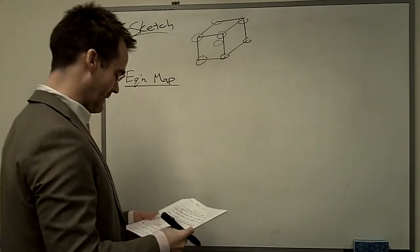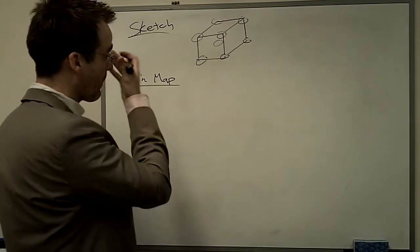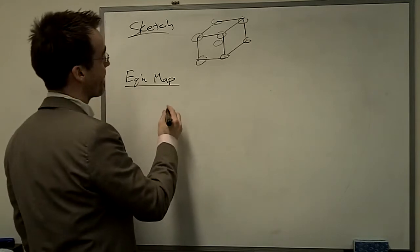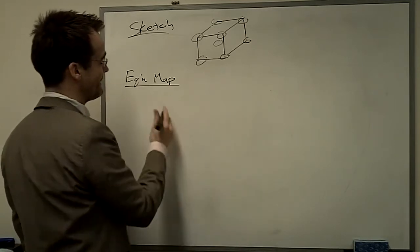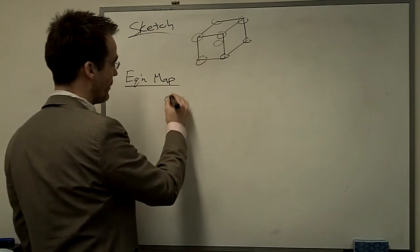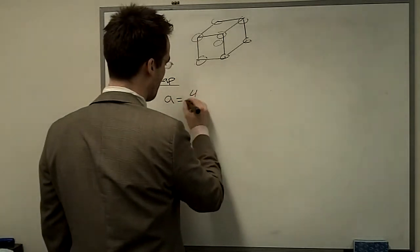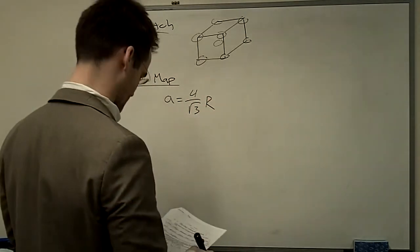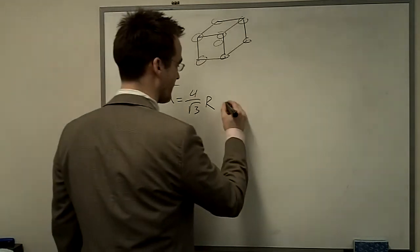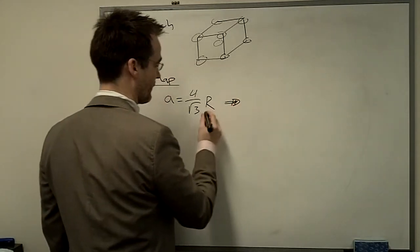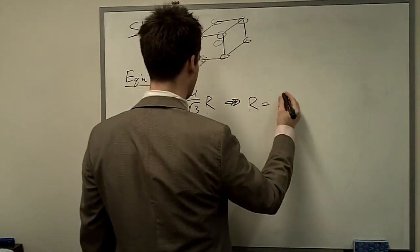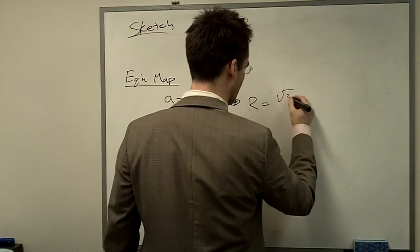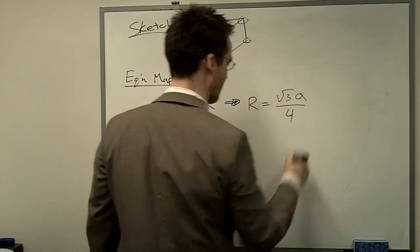So it's asking us for the atomic radius. Let's see, for BCC, we know A equals 4 over root 3 times r. We have that expression, and we want to solve for radius. So we can just rewrite that as radius equals root 3 times A over 4.